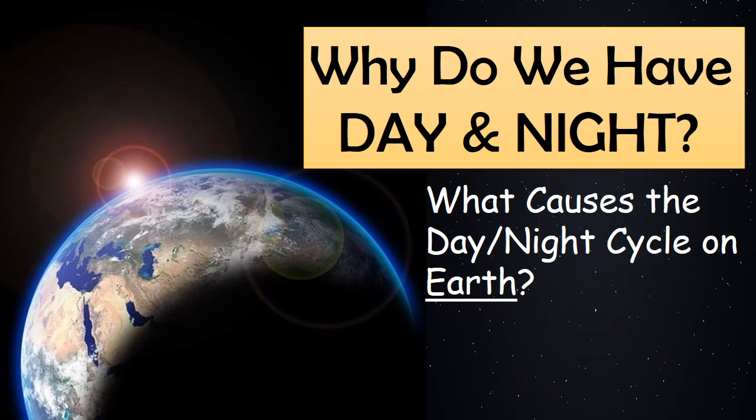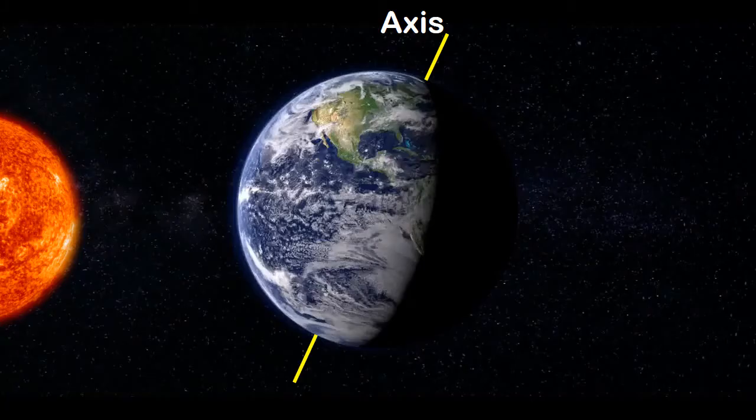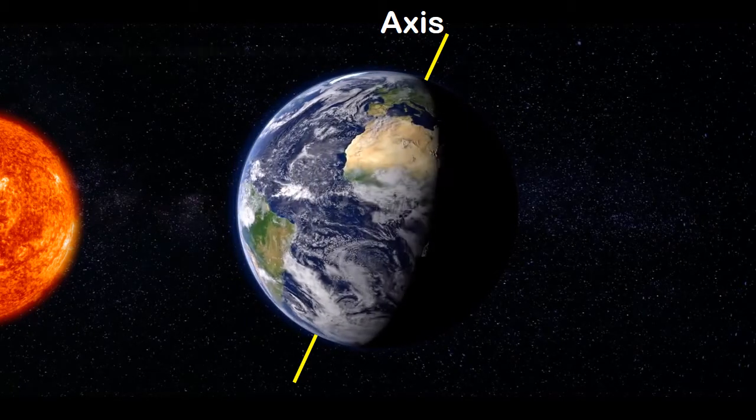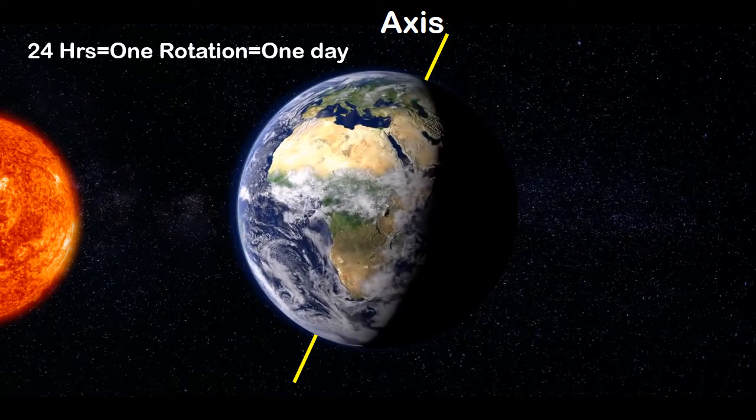The aim of this video is to teach you how the Earth's motion causes the occurrence of day and night. Earth is always moving, and each day the Earth makes one complete rotation on its axis.